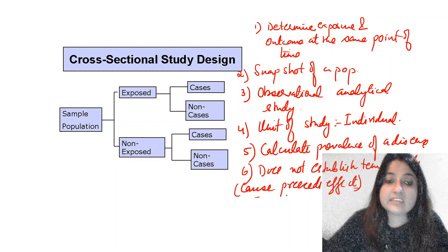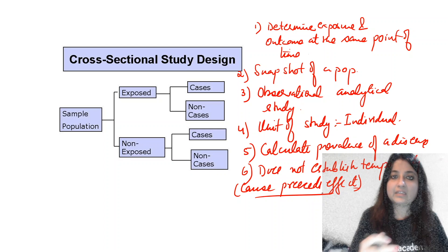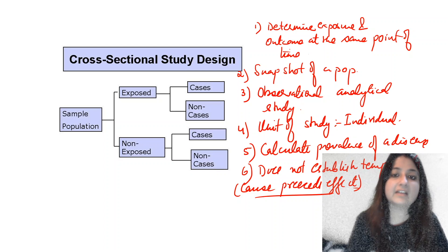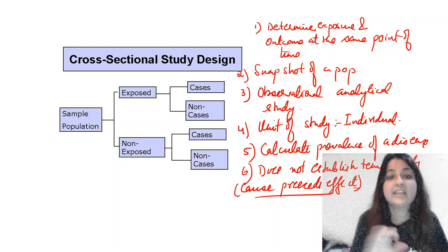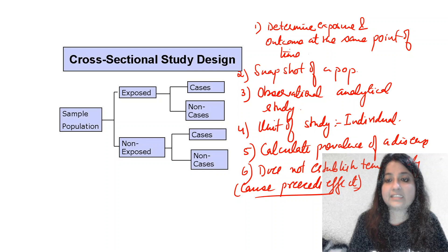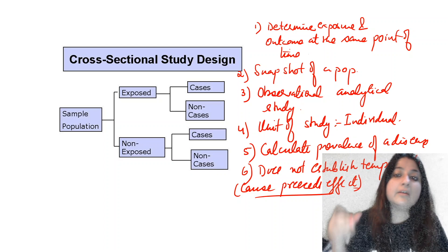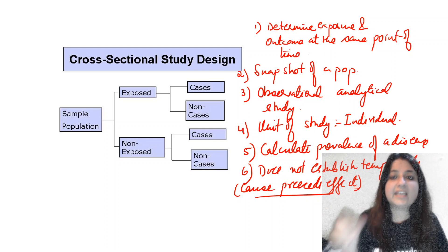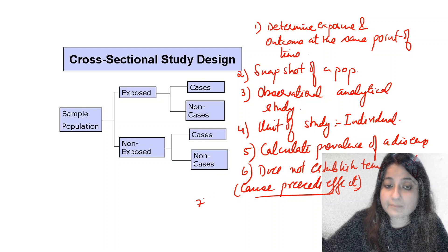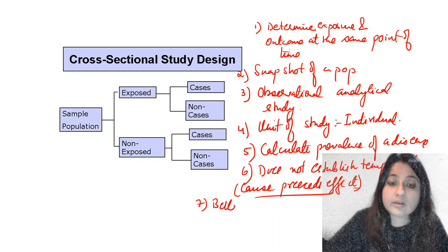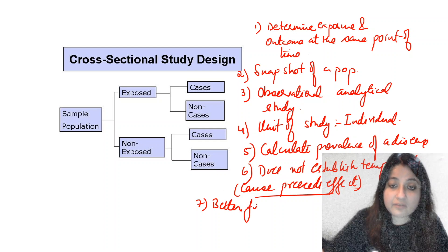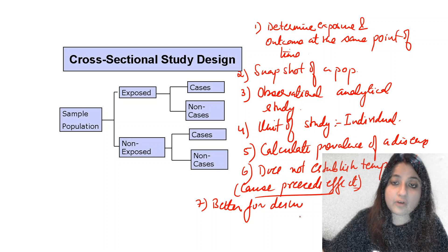Temporality means it cannot establish that cause precedes effect. For example, it cannot confirm that smoking leads to lung cancer. Cross-sectional study does not establish temporality because we are determining exposure and outcome both at the same point of time.